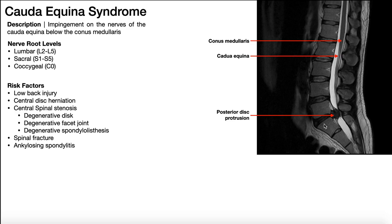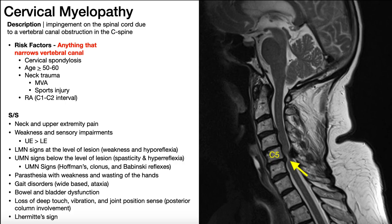With cauda equina syndrome, it depends on where the impingement is. If the impingement is way up at L2, you're going to see impairments from L2 and down. But in this example, with compression below L5, we wouldn't see motor impairments at L2, L3, L4, or probably L5. One of the best ways to conceptualize cauda equina syndrome is that it's very similar to a myelopathy — a compression on the spinal cord — except now instead of the spinal cord proper, it's the cauda equina.